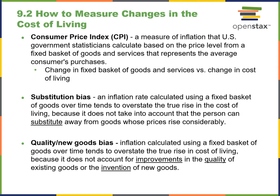How to measure changes in the cost of living: there's a Consumer Price Index (CPI), basically comparing a fixed basket of goods and services versus a change in cost of living. Substitution bias: the inflation rate using a fixed basket of goods over time tends to overstate the true rise in cost of living because it doesn't account for the person substituting away from goods whose prices rise considerably. Quality of new goods bias: inflation measured by the same basket tends to overstate true cost-of-living increases because it doesn't account for improvements in the quality of existing goods or the invention of new goods, meaning items in the basket may be obsolescent or no longer relevant.